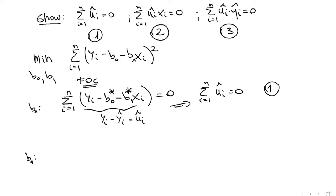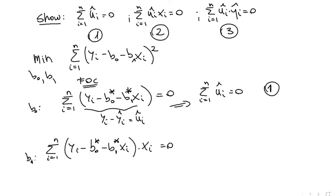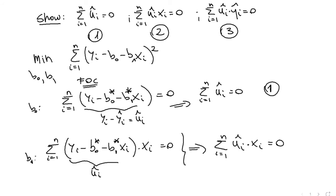For the first-order condition with respect to b1, we have that the sum from i equals 1 to n of (y_i minus b0 minus b1*x_i) times x_i had to equal 0. Again, once we find the optimum this equals 0, and this expression is just u_hat_i. So this says that the sum from i equals 1 to n of u_hat_i times x_i equals 0, which is exactly property 2.